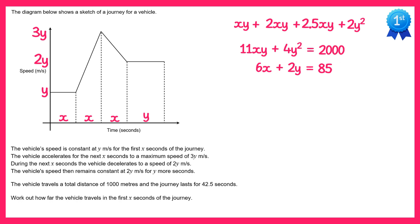I can rearrange the second one to get x as the subject. So let's take away 2y from both sides first then we get 6x equals 85 minus 2y, then divide both sides by 6. So we'll get x equals 85 minus 2y over 6.